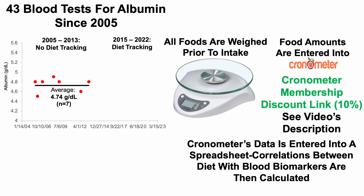I then take Chronometer's data and enter it into a spreadsheet. Because I'm also tracking blood biomarkers at the same time, I can calculate correlations between diet and blood biomarkers. I started blood testing way more often in 2015, and my first blood test for albumin actually started in 2016. Over that seven-year period, 2015 to 2022, my average albumin level is 4.94 grams per deciliter, across 36 blood tests.